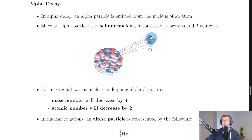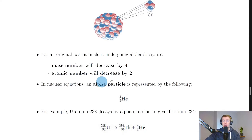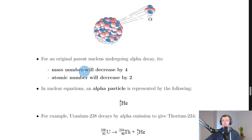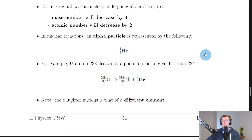We can see why this is the case. Mass number is the total number of protons and neutrons, so if we lose an alpha particle made up of two protons and two neutrons, the mass number decreases by four. The atomic number Z is the number of protons only, so losing two protons means the atomic number decreases by two. In nuclear equations, an alpha particle is represented by helium He with mass number four and atomic number two.